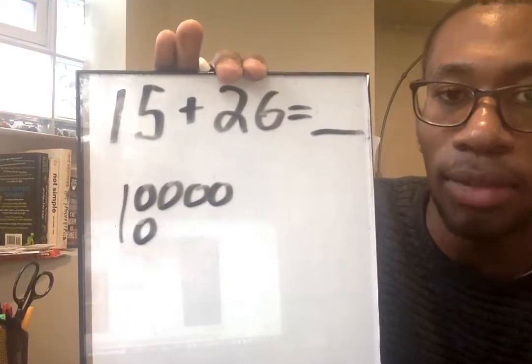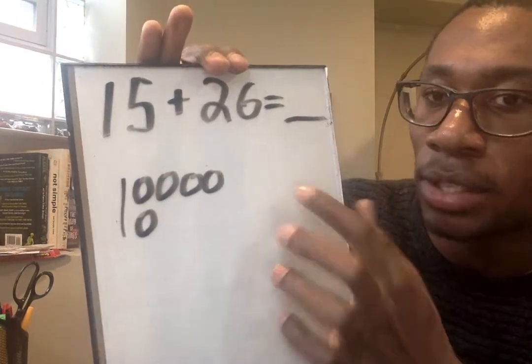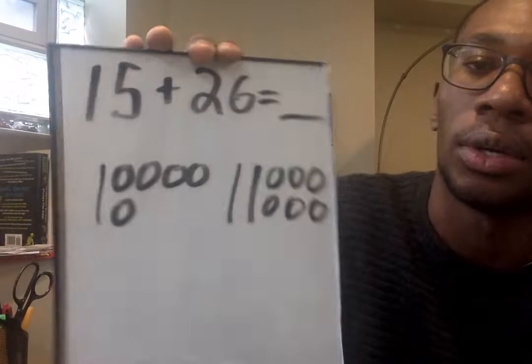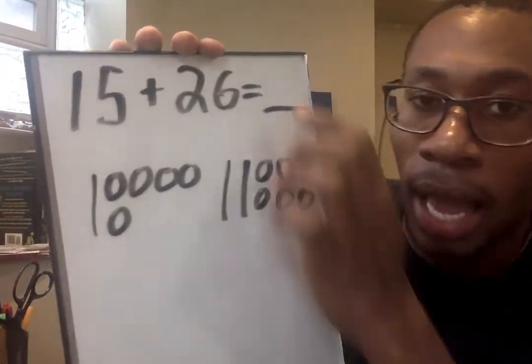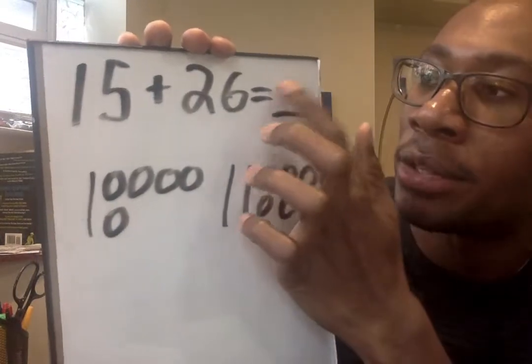So my first step is going to show my base-10 picture. 15: 10, 11, 12, 13, 14, 15. Just like that, fast and quick. Then I'm going to show 26 as the base-10 picture. 10, 20, 21, 22, 23, 24, 25, 26. Just like that. And then now that I have both pictures, I'm going to count it up all together to figure out my missing hole.